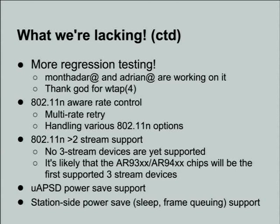If someone wants to take the rate control and extend it to do proper 11N, be my guest. I'll probably do 11N three and four stream support once I get the current generation three-stream 11N NICs from Atheros in the tree. The three-stream NICs go up to 450 megabits - 300 megabits is not really wireless anymore, and 450 megabits is really not wireless anymore, so there are some significant driver issues to make sure that performs correctly. And I need to finish off power save support.